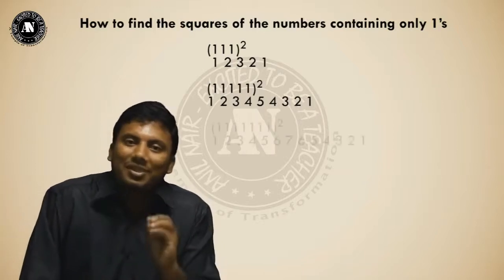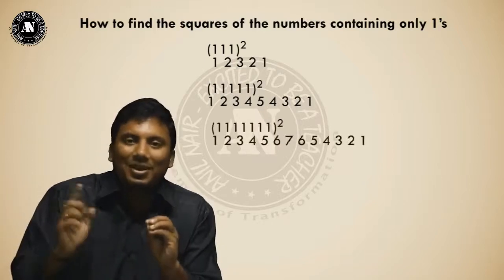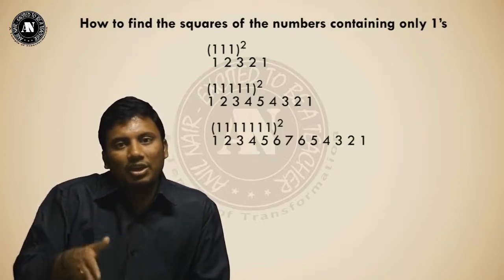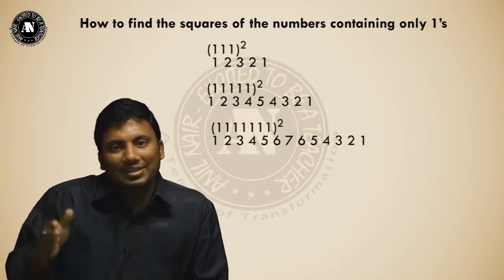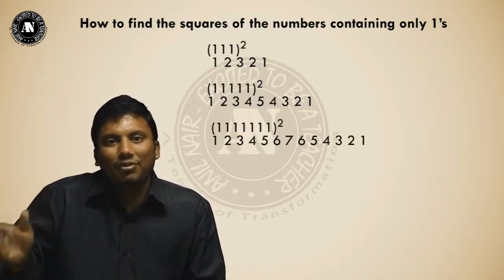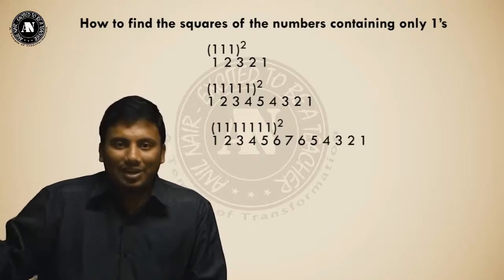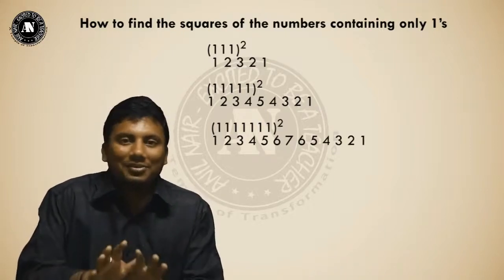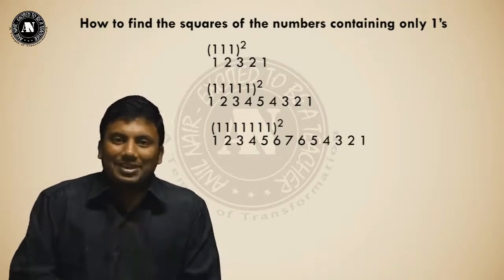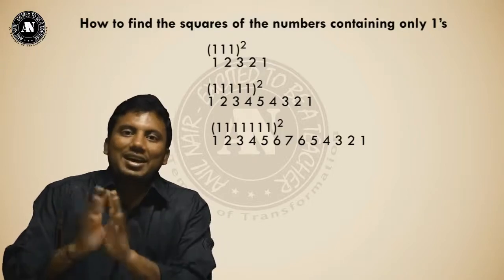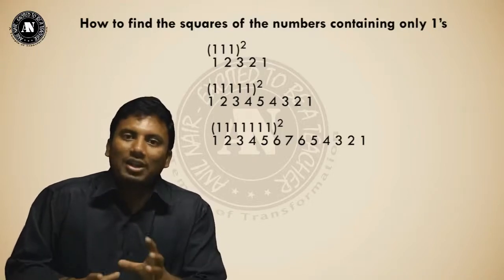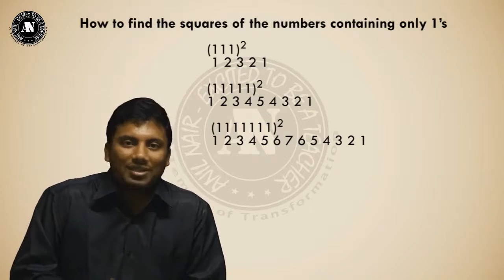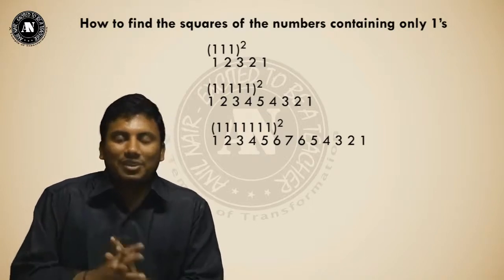One more example: seven ones squared. The answer is 1, 2, 3, 4, 5, 6, 7, 6, 5, 4, 3, 2, 1. This logic will hold good until nine ones are there. This is the first observation: when all the digits in the number are only ones, it works up to nine ones.